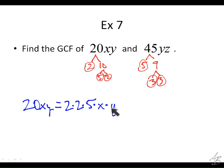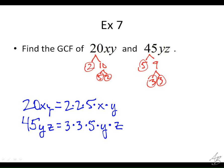Does that make sense? So for 45YZ, the 45 part is 3 times 3 times 5, and then we also need the YZ, so we do times Y and times Z. We're looking for common factors not just with the numbers now, but also with the variables. Looking at the numbers, they have the 5 in common. For the variables, they both have a Y. They don't both have an X, and they don't both have a Z, so we're not going to circle those.